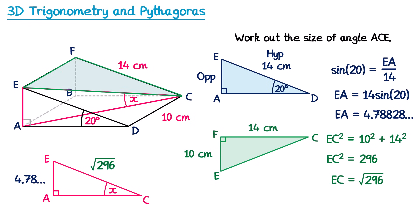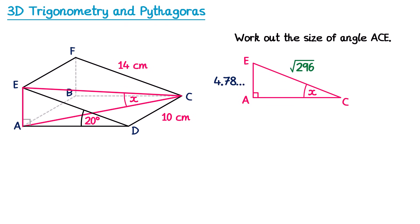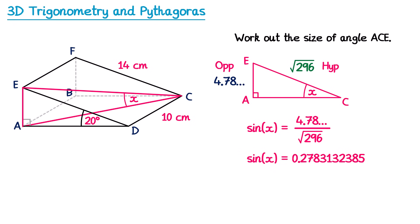Going back to the red triangle ACE, we label EA as opposite and EC (√296) as hypotenuse, so we use sine. Sin X = (14 sin 20) ÷ √296. You need to be really careful here — you cannot just type 4.78, that would be premature rounding. Instead, compute 14 sin 20 on your calculator to get that full number, then divide by √296. Using inverse sine gives X = 16.2 degrees to one decimal place.